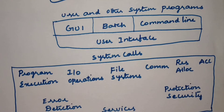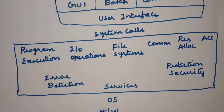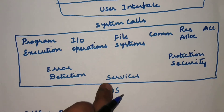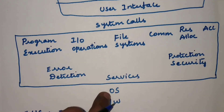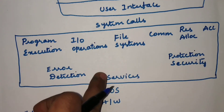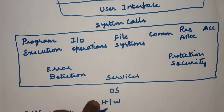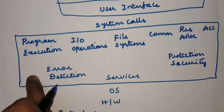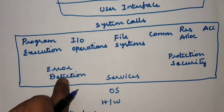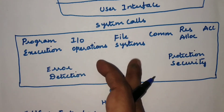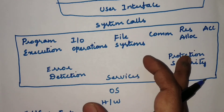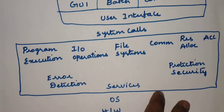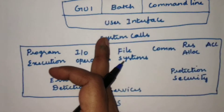We already discussed this diagram. Here we have at the bottom layer the hardware, and afterwards we have the operating system, because the connection between the hardware and the user program requires the operating system in between, so that we can execute many user applications and all hardware resources must be used only through the operating system. Here we have a lot of OS services like error detection, program execution, IO operations, file systems, communication, resource allocation, accounting, protection and security. We will discuss all these services one by one, and the next layer is the system call.